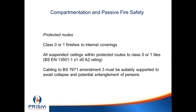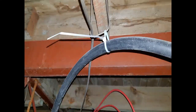Protected routes should have Class 0 or Class 1 surface finishes including carpets. Suspended ceiling tiles in a protected route should be Class 0 or Class 1, or the European standard EN 13501 A2 rating for limited combustibility. Cabling must comply with BS 7671 — the 17th edition wiring regulations Amendment 3 — and should be metal-clipped, not plastic-clipped or tie-wrapped, to avoid collapse. This came out of firefighter deaths in Hertfordshire. The right people must do the right job with the right tools.